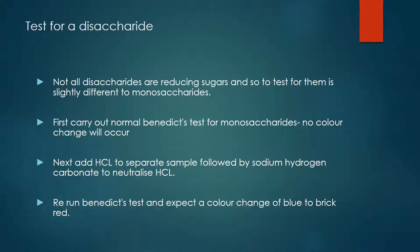To hydrolyse the disaccharide, we use HCl — hydrochloric acid — to break the glycosidic bond. This is then followed by the addition of sodium hydrogencarbonate, which is used to neutralize the HCl. This is because the Benedict's test can only take place in alkaline solutions, not acidic solutions. When we rerun the Benedict's test, we would expect a color change from blue to brick red.